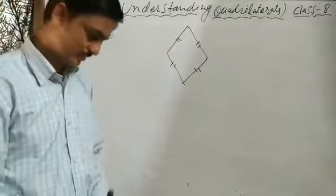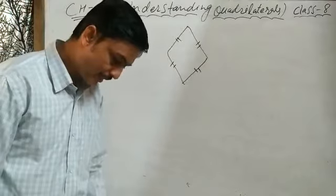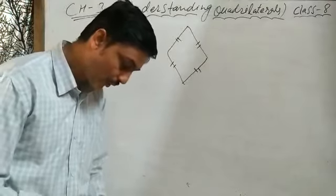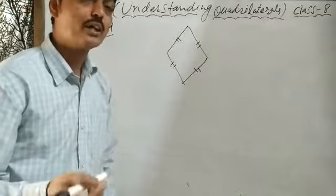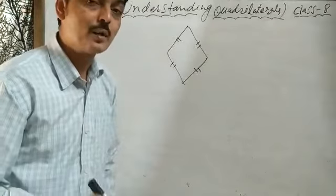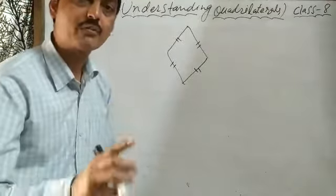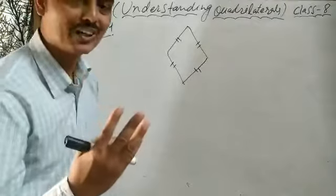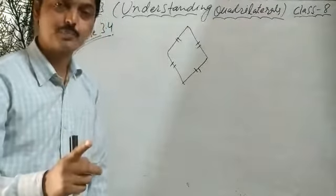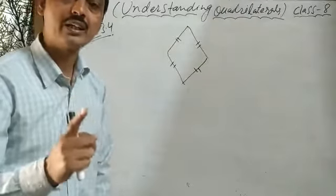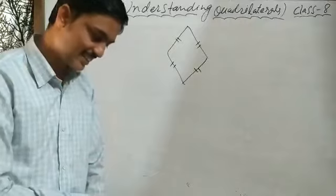Question 3: Explain how a square is a quadrilateral. Because a square is a polygon made up of four line segments — that is the reason.